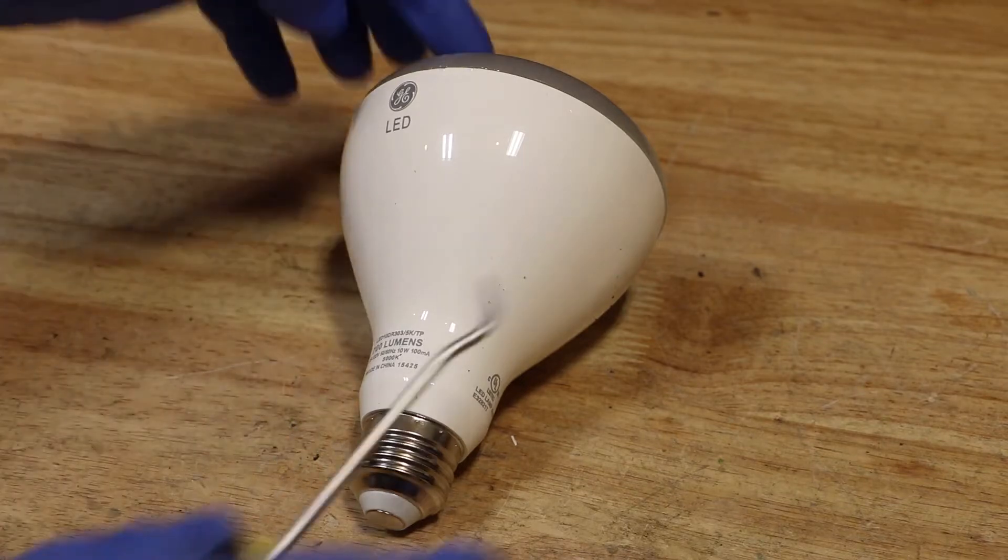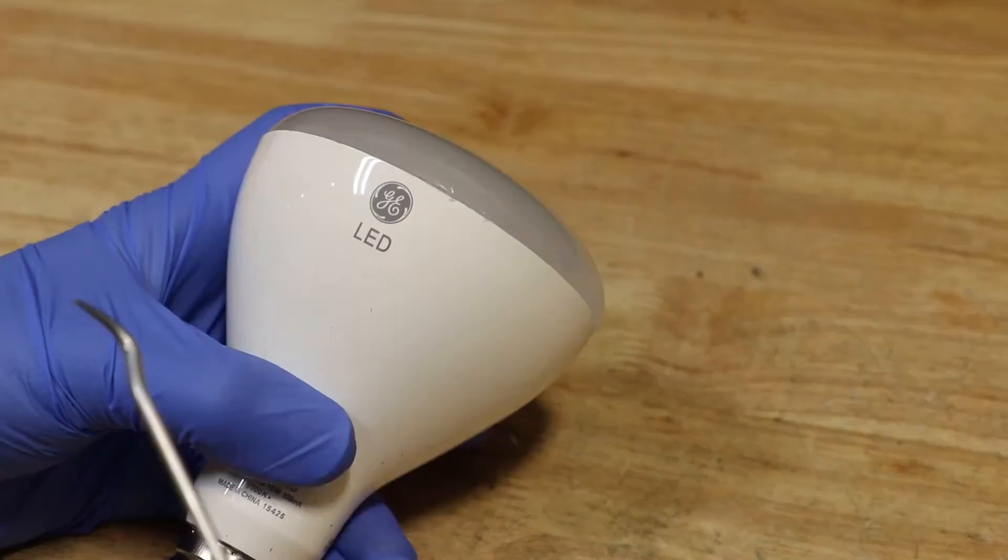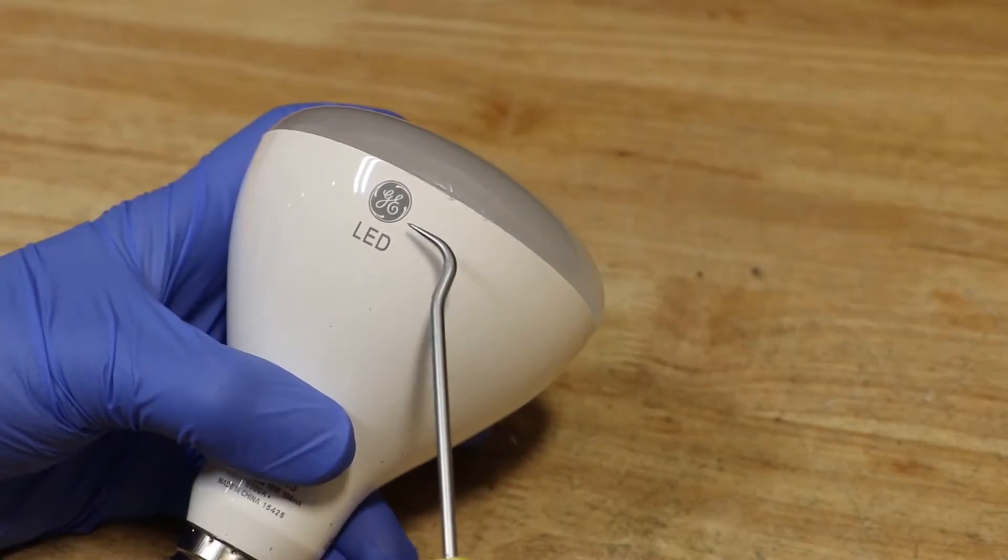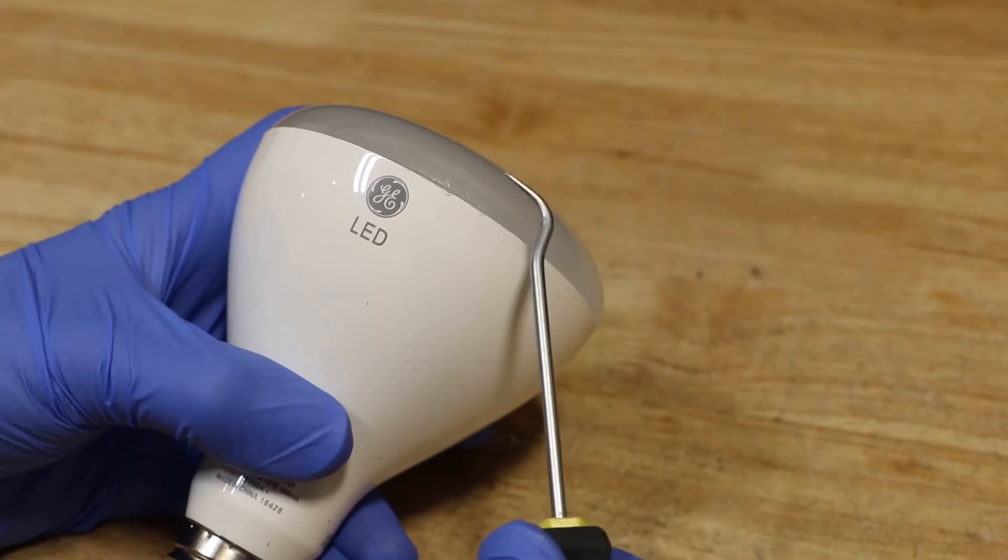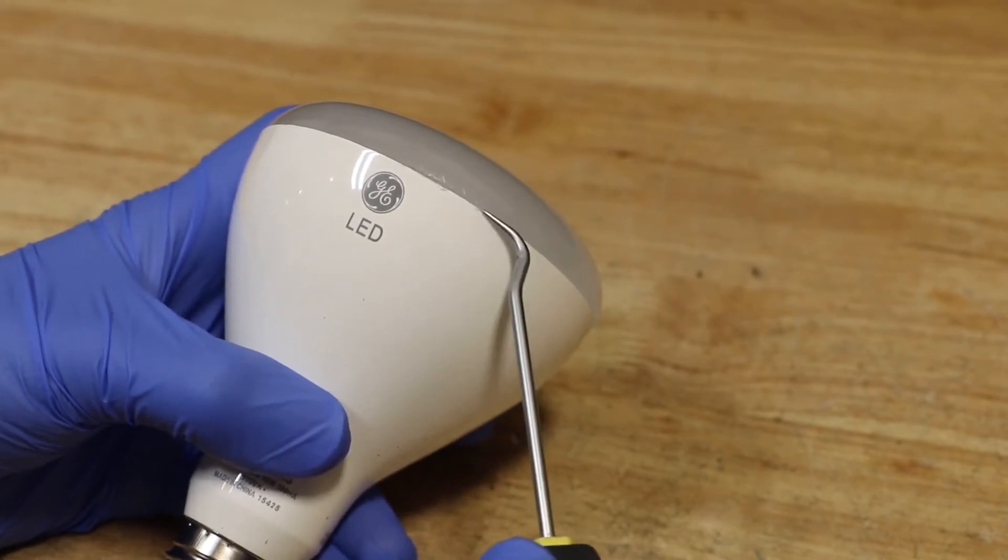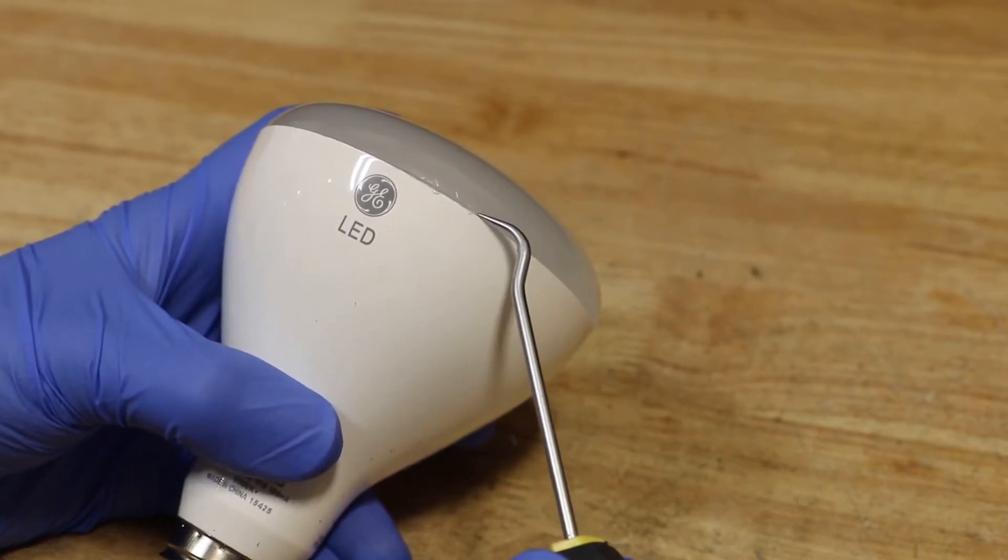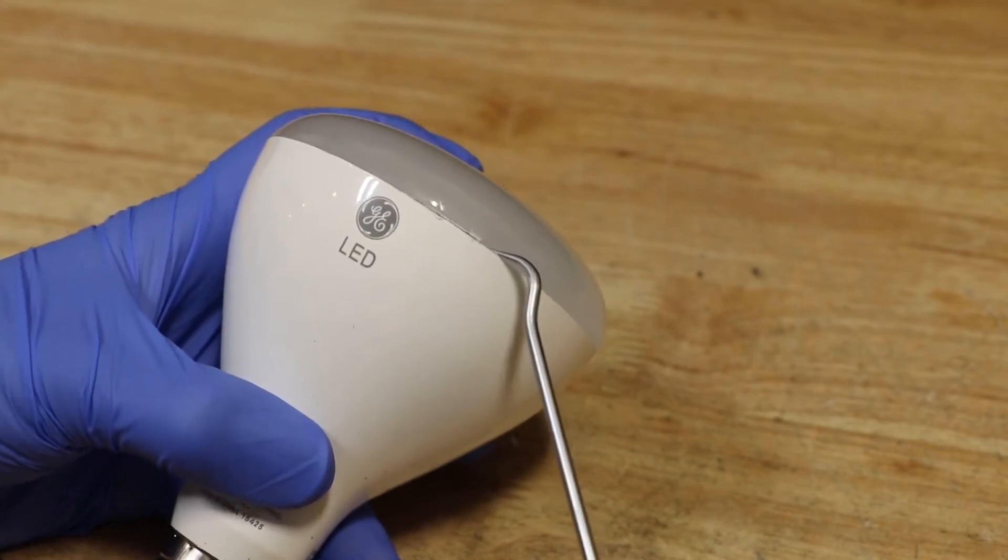The first step to disassembly is to remove this plastic top. Just to the right of the GE logo is a clip holding the plastic top to the housing. I'm going to use this hook tool to slide in and release the clip and pop the top off.